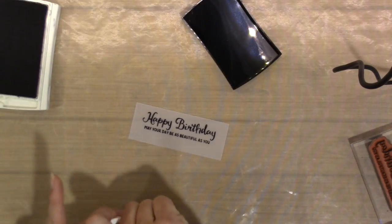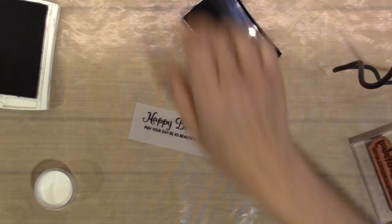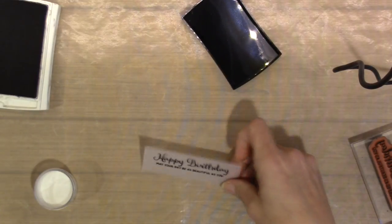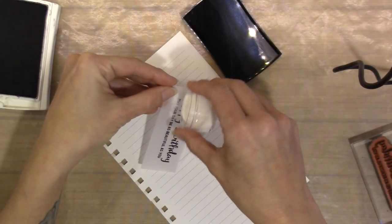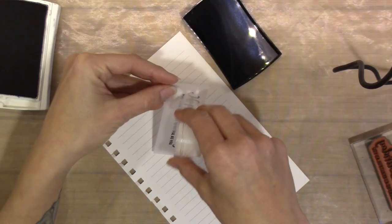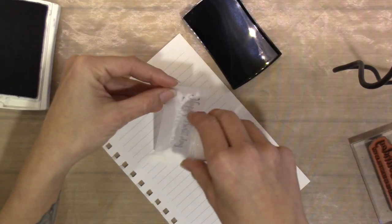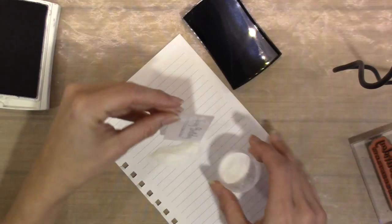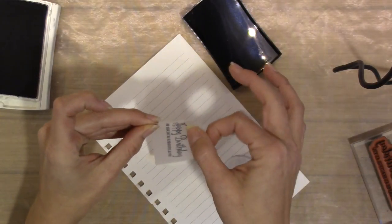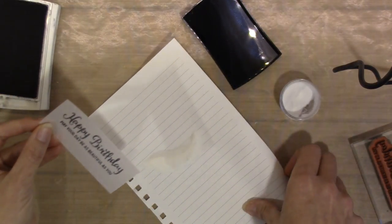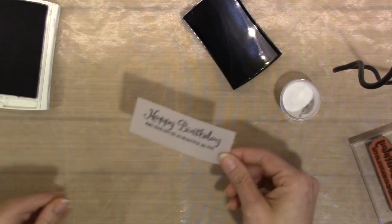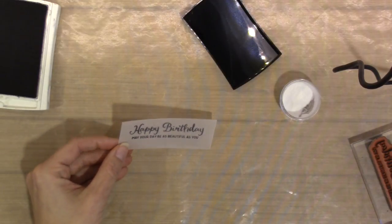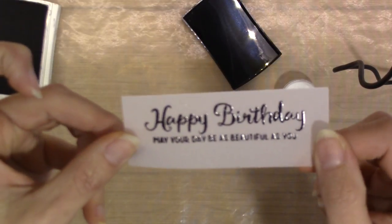And then I'm going to bring in my clear embossing powder this time and I'm going to emboss the sentiment. You do not have to emboss the sentiment. I think it would be just as beautiful with just the basic black ink. However, I kind of liked the extra dimension and texture that it gave it and I really did want it to stand out from the background because the background is so vibrant. I just wanted a little bit more of a pop with my sentiment. That turns out so pretty on that vellum, isn't it?